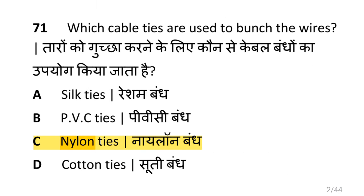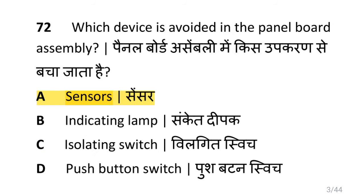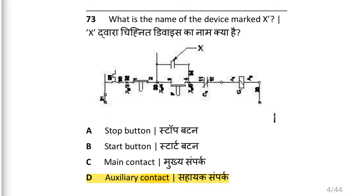Which cable ties are used to bunch the wires? i.e. nylon ties. Which device is avoided in the panel board assembly? i.e. sensors.